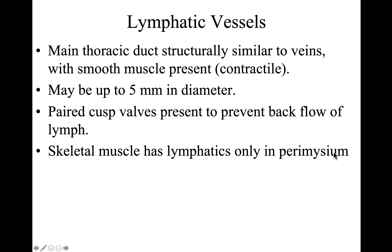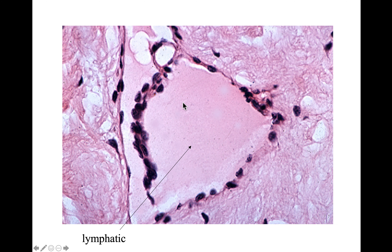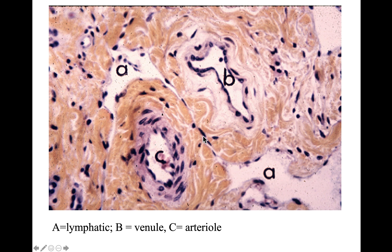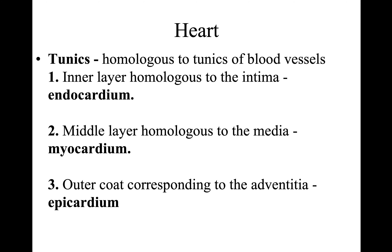The muscle has endomysium, perimysium, and epimysium, and the perimysium is just around the muscle bundles. Looking at the slide, we can see the lymphatic vessels with lymph inside — notably there are no red blood cells or white blood cells. We can compare the arterial, venous, and the large anastomosing lymphatic capillaries.